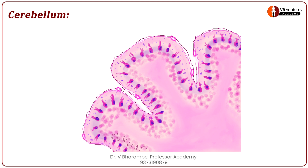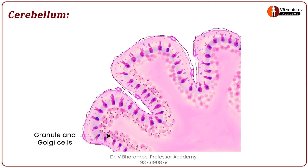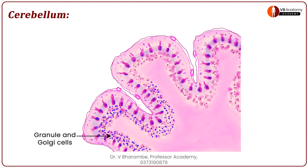Finally, let us begin to add lots of nuclei in the granular layer. Again, have patience and keep on adding nuclei. If the layer is not well defined, add another layer of nuclei to define that layer very well, because these three layers are clearly identification features of the cerebellum. The three layers must be well defined.